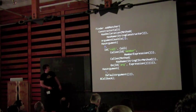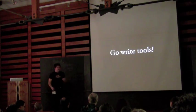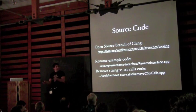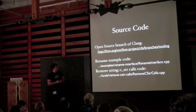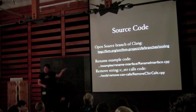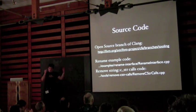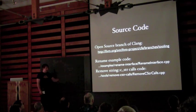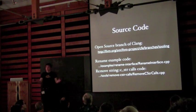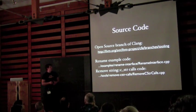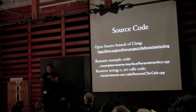Everything I've shown you is open source. It's all available, it builds and works, and you can get it today. It's all in a branch of the Clang project. We're slowly merging everything into the main line; the only thing still in the branch are the AST matchers. I also made sure the examples are checked in and building in the branch — the rename tool I walked through is checked in with lots of comments to help you understand it. The `c_str` removal is there as well, with lots of additional logic to detect other patterns and weird constructs. You can check out this branch, build it, try it out, and let me know if you have problems.